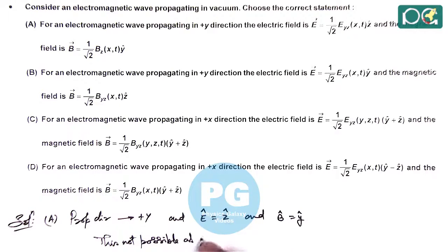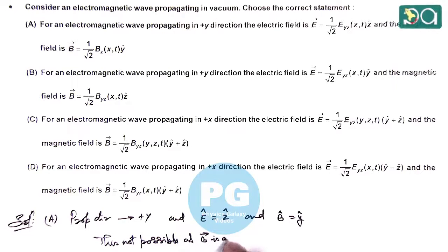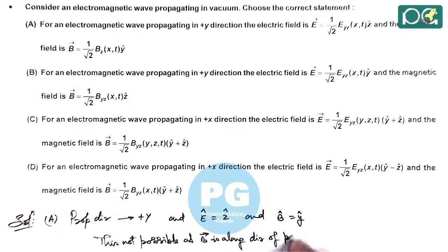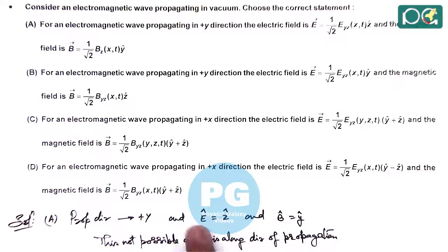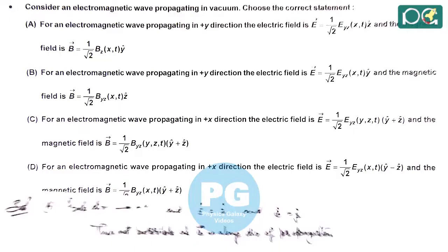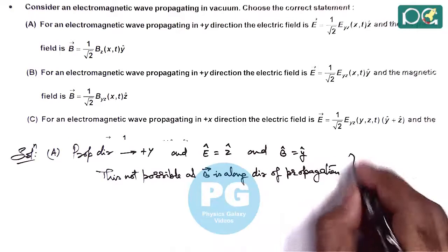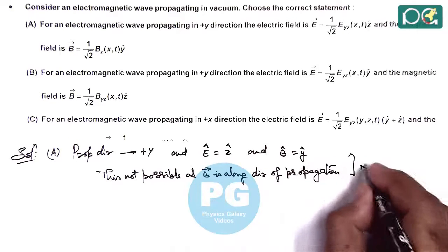The B vector is along the direction of propagation. As we already discussed, for an electromagnetic wave, E and B must be perpendicular to the direction of propagation, so option A is not correct.